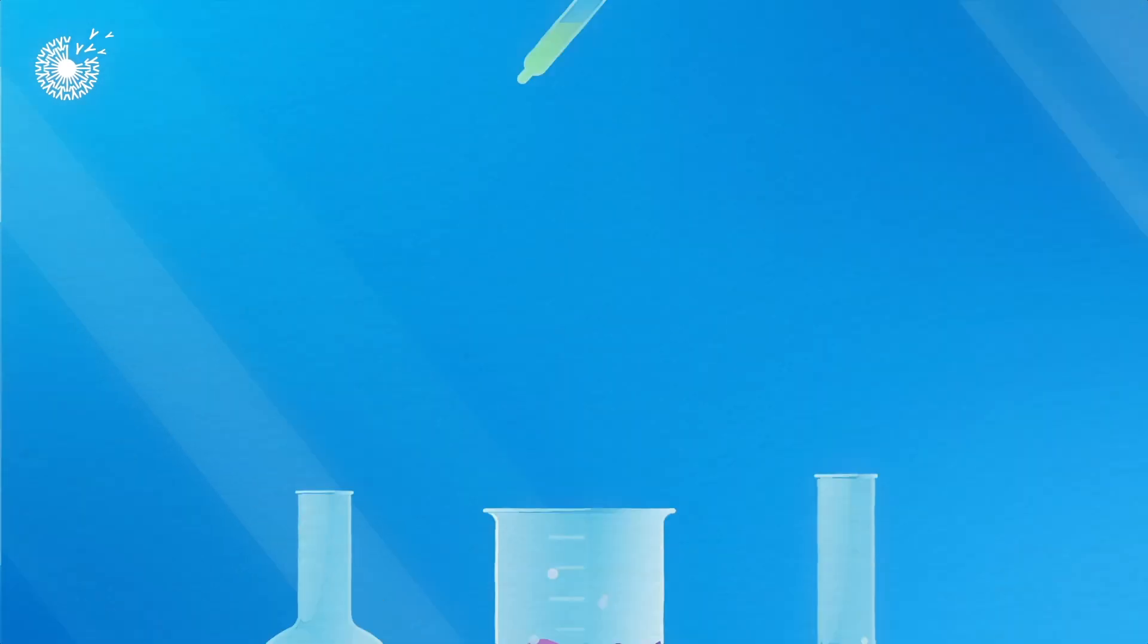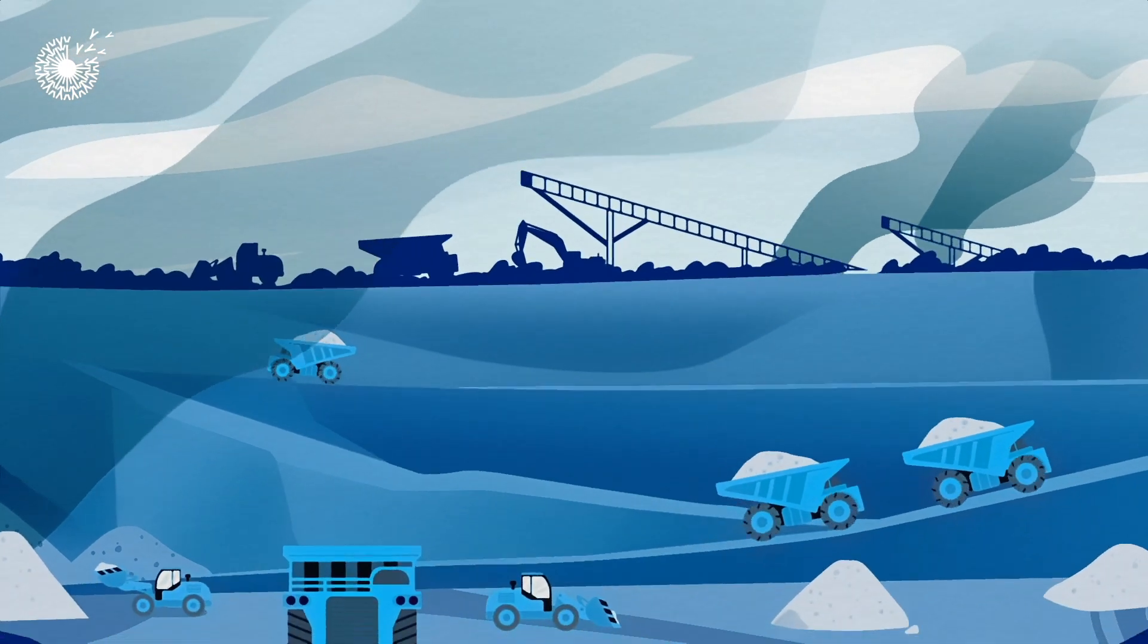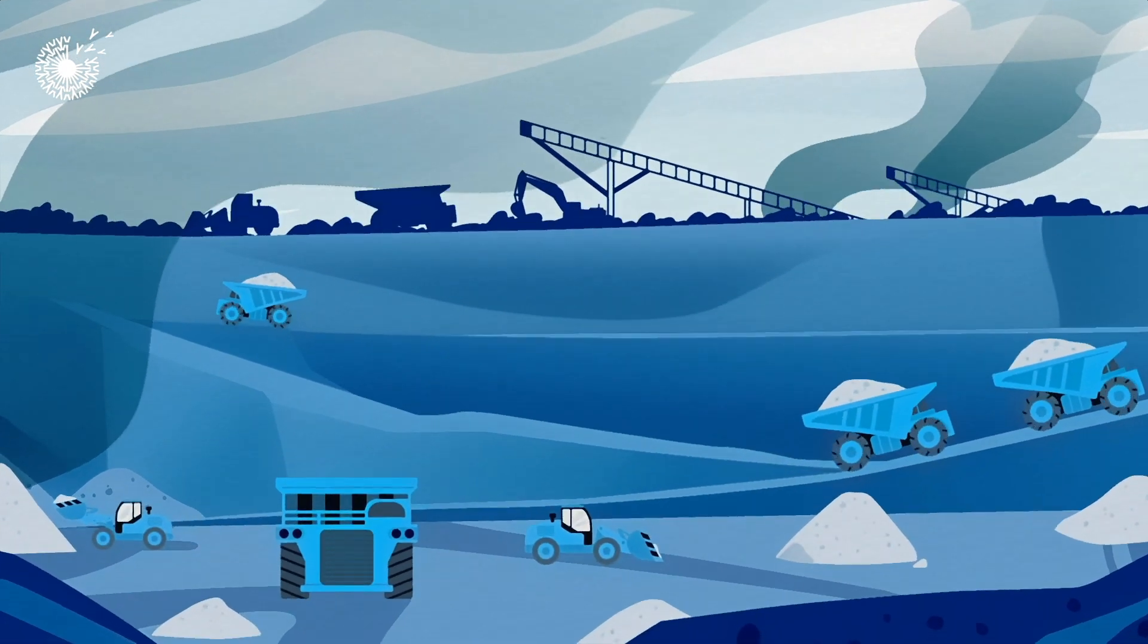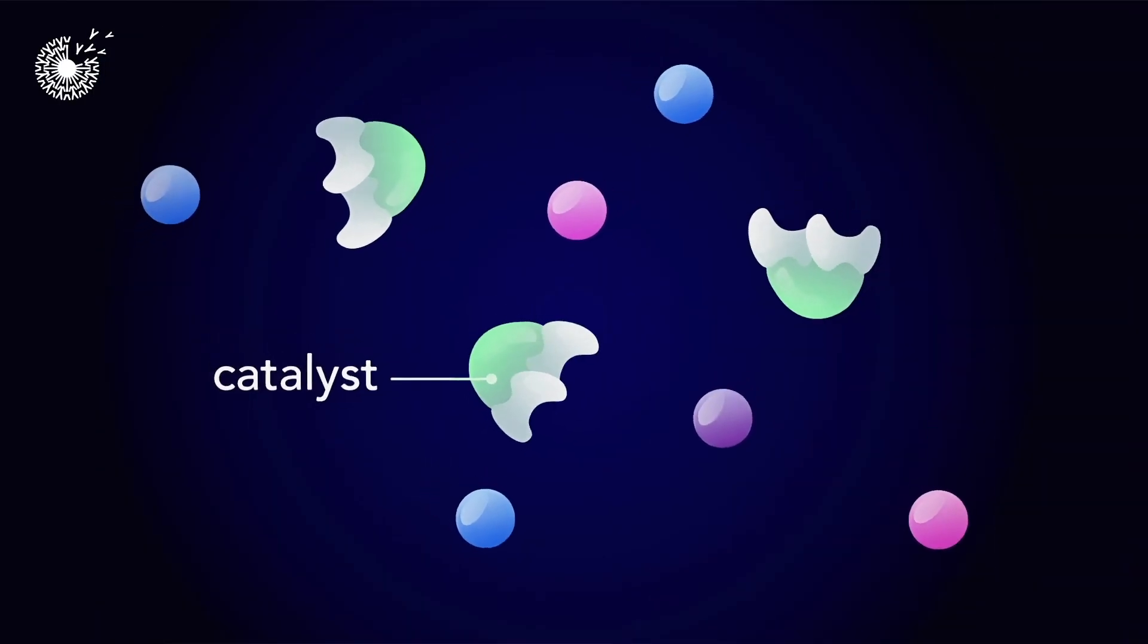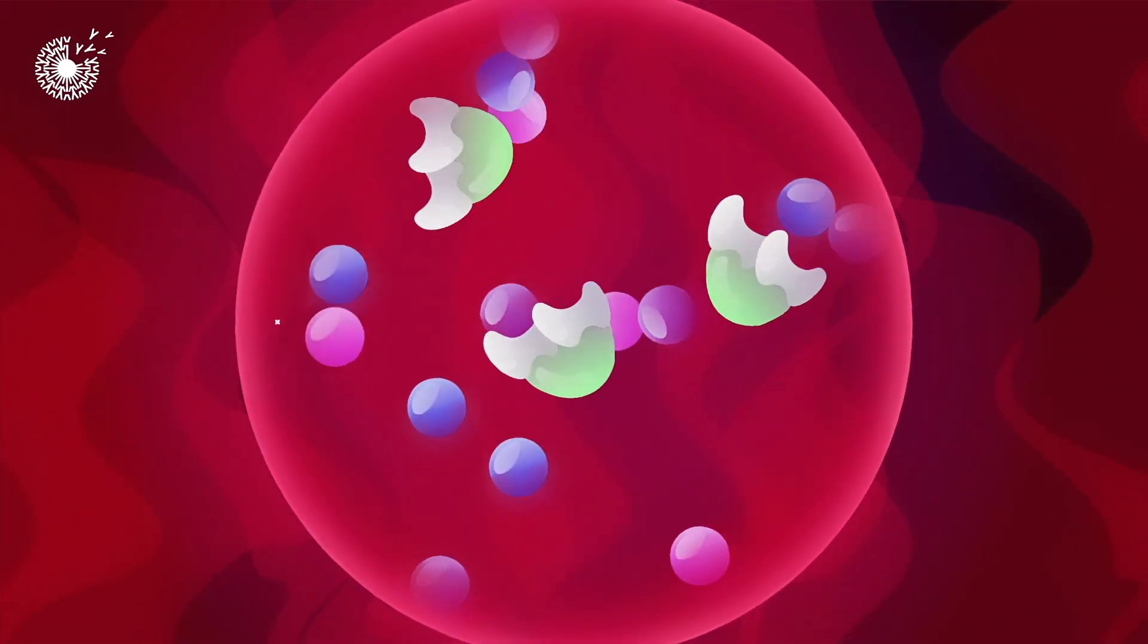Most chemical processes use rare precious metals like iridium or ruthenium as catalysts. These metals are typically mined in environmentally damaging and unsustainable ways. These catalysts also need extremely high temperatures and pressures in order to work, which requires a lot of energy.